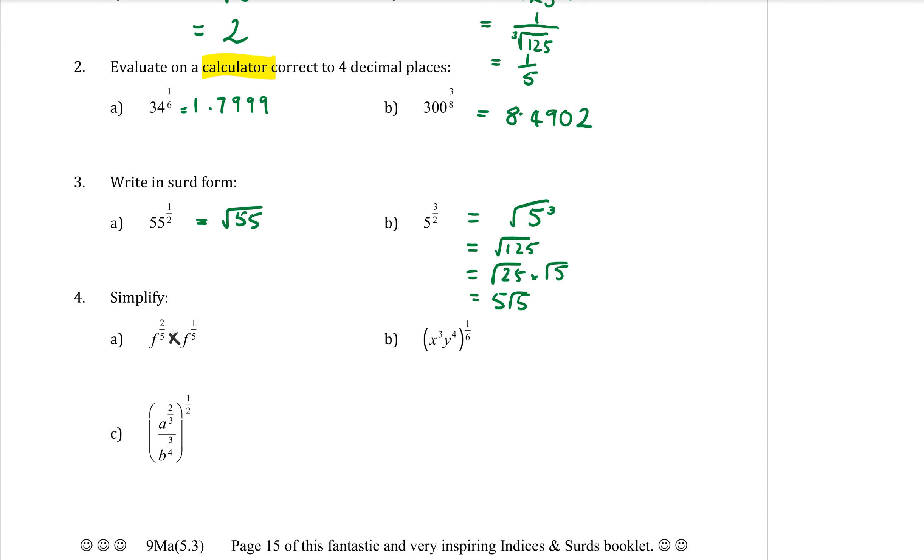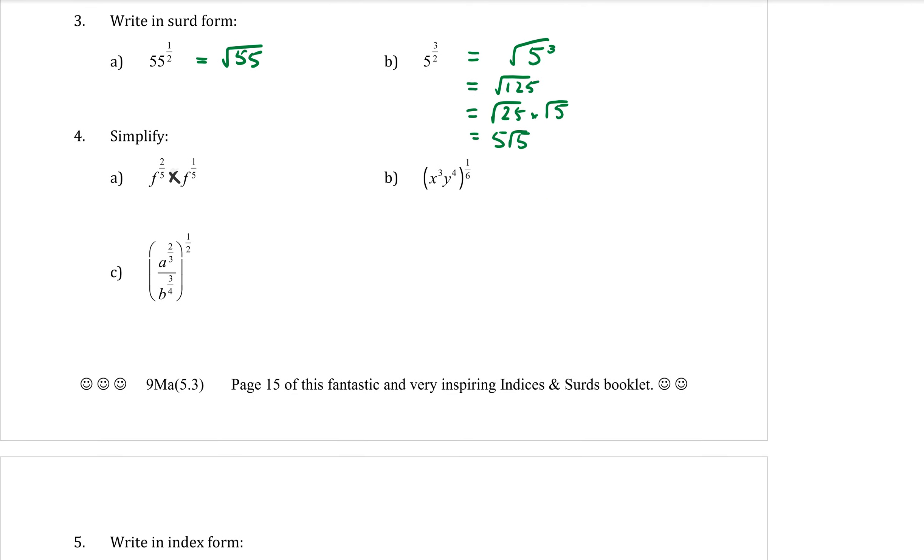Question 4, we're finally going to put some letters in there. And there's some of our other index laws coming in here as well. If I am multiplying things with the same bases, I add the powers. So 2 fifths plus 1 fifth makes 3 fifths. It just says simplify. I have simplified. I don't have to turn that into surd form unless it asks me to. So I'm going to leave that question there.